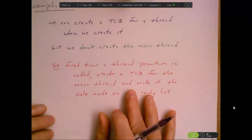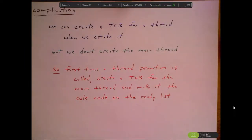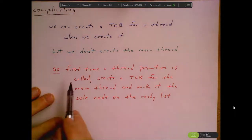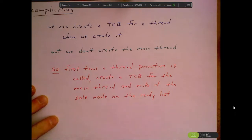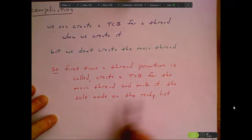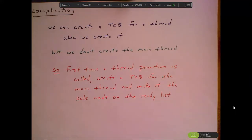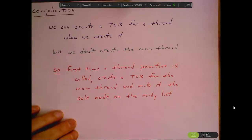There's one complication we need to deal with. We can create TCBs for threads that we create via thread_create, but our threading model — like the POSIX threading model — is that we get one thread for free. The main thread is running at the beginning of the program and we didn't get to create it, so we didn't get to create a TCB for it either. The first time any thread primitive is called, we have to check whether we've created a TCB for main yet, and if not, create it and make it the sole node on the ready list.